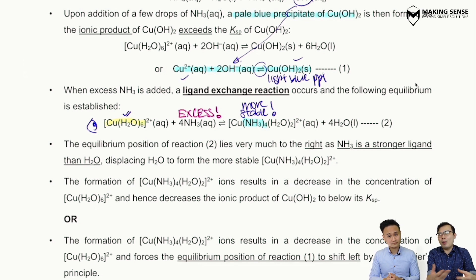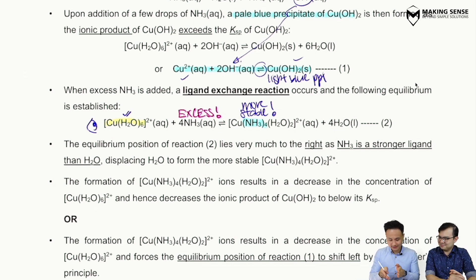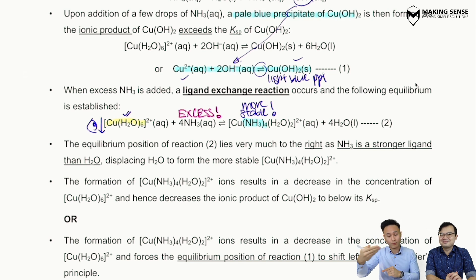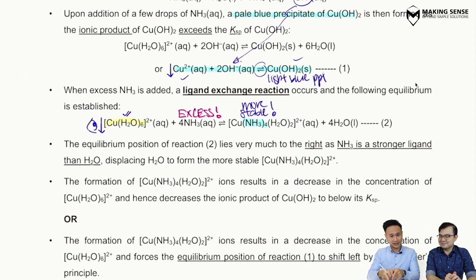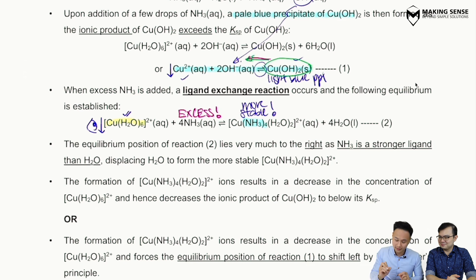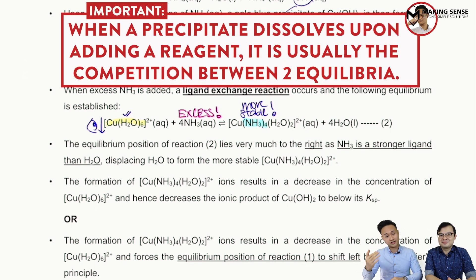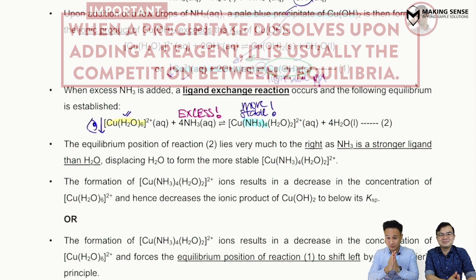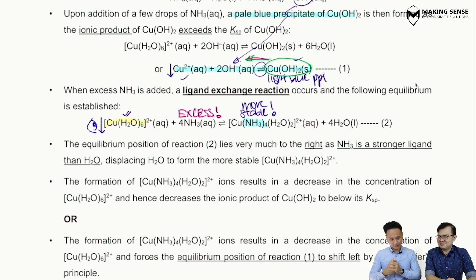Why does the light blue precipitate dissolve? When the copper–ammonia complex forms, Cu2+ ions are consumed. Looking back at the first equilibrium — the formation of the Cu(OH)₂ precipitate — a decrease in Cu2+ concentration shifts the position of equilibrium to the left, according to Le Chatelier's principle, to restore Cu2+. Shifting left means the precipitate dissolves. This is how Le Chatelier's principle explains the disappearance of the blue precipitate.